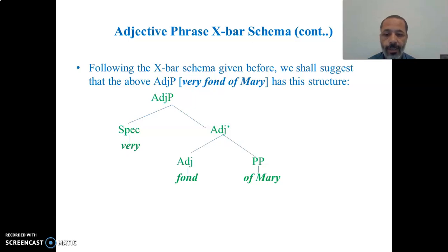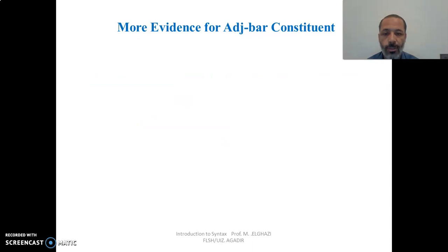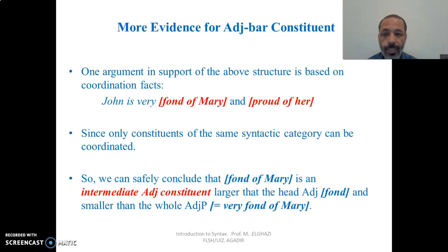In this structure, the head is 'fond,' and the complement is the preposition phrase 'of Mary.' The head together with the complement project into an adjective-bar. Then the adjective-bar with the specifier 'very' projects into a full adjective phrase. So 'very' is the specifier, 'fond' is the head adjective, and 'of Mary' is the complement. There are arguments which support this representation and the existence of an intermediate-level category in adjectival constituents.